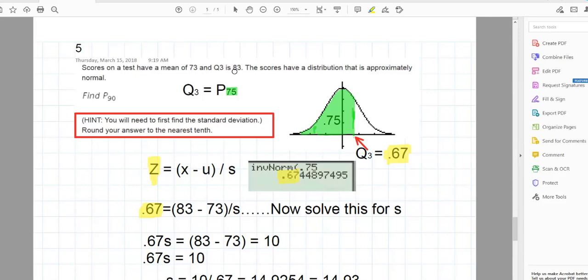The Q3 is the number 83, and Q3 is known as the 75th percentile. In other words, 75% of the numbers in this distribution are below Q3, that is below 83. So that can be interpreted this way, that here is Q3. This is Q3 right here, and in this distribution with a mean of 73, that number is 83.